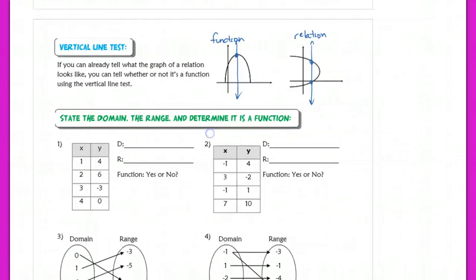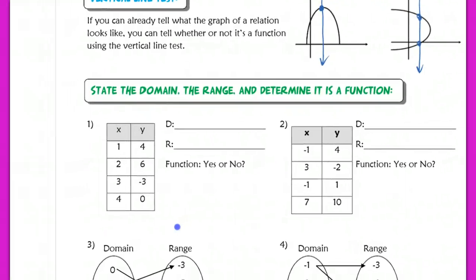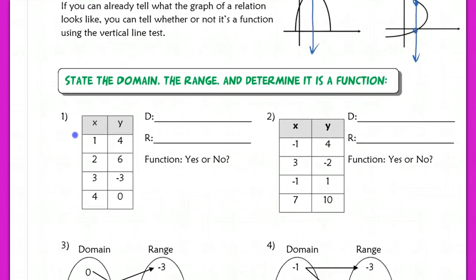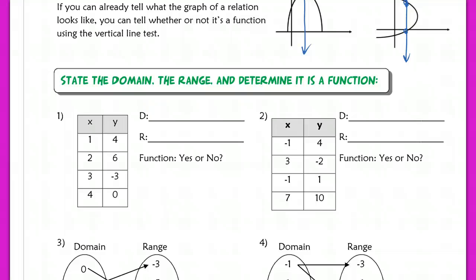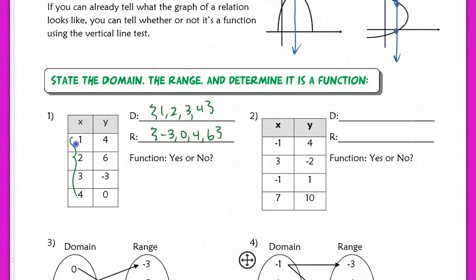Here are some easy examples of determining whether something is a function and stating domain and range. The domain here is the numbers 1, 2, 3, and 4. The range, written from smallest to largest, is −3, 0, 4, and 6. Is this a function? You've got four different inputs, each with different outputs — like four different people with four different birthdays. Absolutely, this is a function.